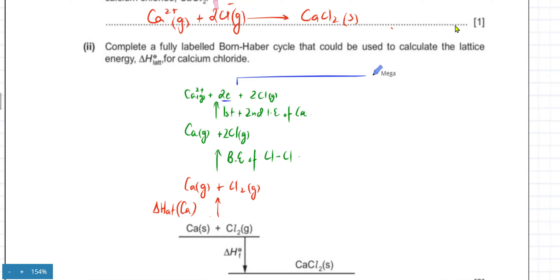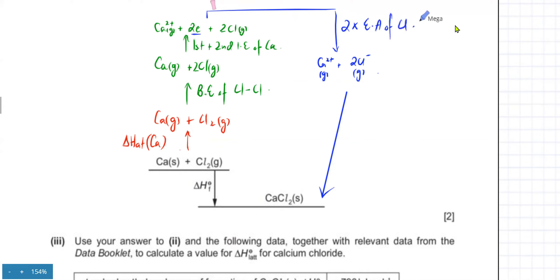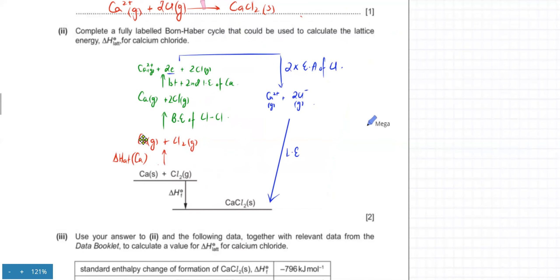Then the two electrons that are lost are gained by Cl, so the next step is exothermic. Calcium is already in the form of an ion, and now the Cl atoms also gain electrons to form a negative ion. Finally, the last step is that the gaseous ions get together to form the ionic lattice — we call this electron affinity. That's two times the electron affinity of Cl, because you have two Cl atoms. The last step is the lattice energy, where the gaseous ions get together to form the solid ionic lattice.